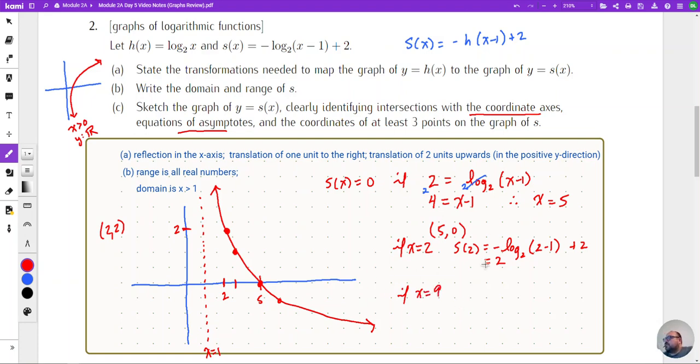So I could look at this and say hey here's another useful point. If x is equal to nine, s of nine is going to be the negative log base two of eight plus two, which will be negative three plus two, which is negative one. So here is x is nine and here is negative one.